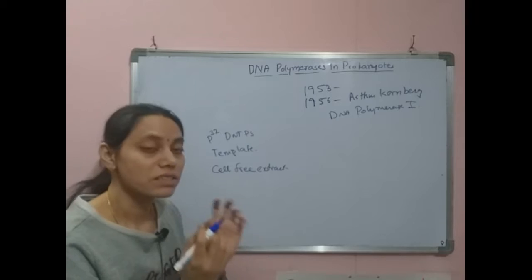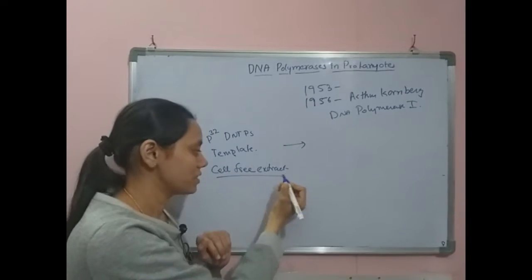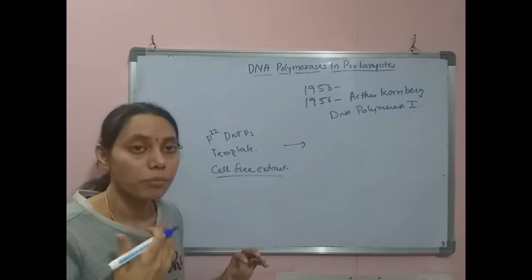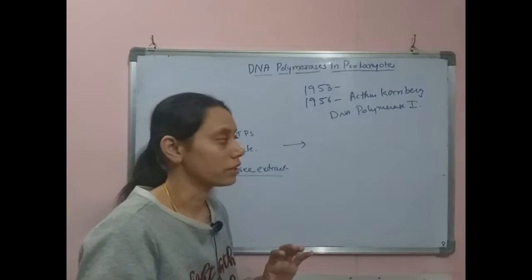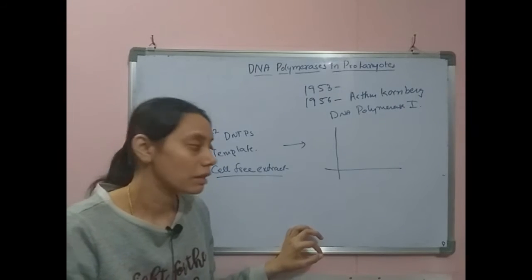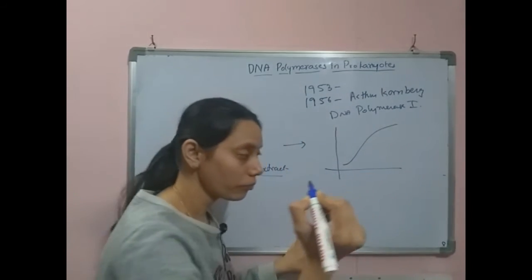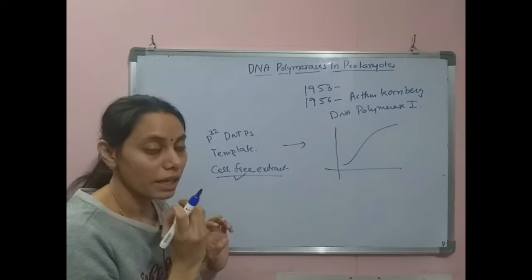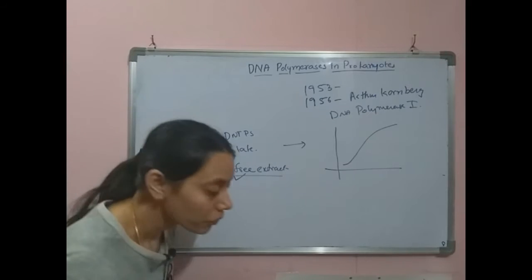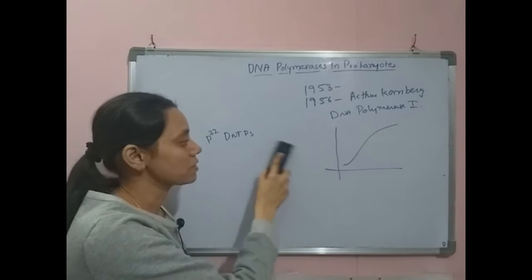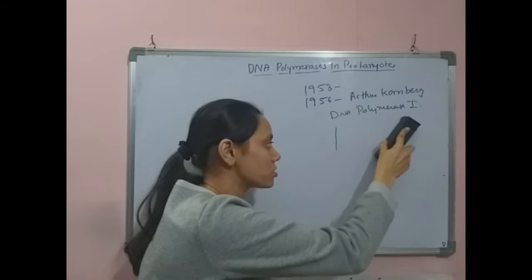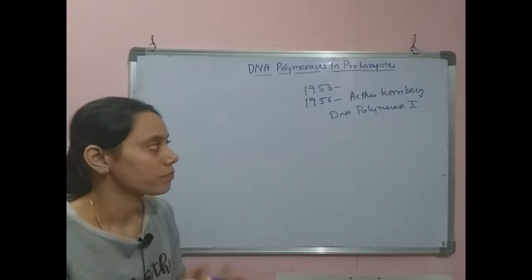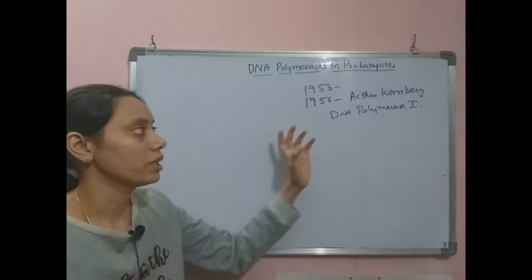The expectation was that the cell-free extract might copy the template DNA by incorporating the dNTPs and replicate the DNA. The result confirmed this — after addition of the cell-free extract to the solution containing dNTPs and template, replication started and nucleotides were added. When they isolated the DNA, the amount of DNA and its radioactivity increased over time, indicating that the cell-free extract contained components — specifically DNA polymerases — that help DNA replicate and copy into new strands.